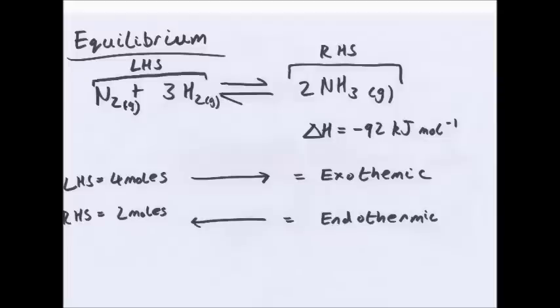Also delta H of the forward reaction is minus 92 kJ/mol. That means the forward reaction is exothermic. The backward reaction is endothermic. And also if you look, this will become more important later, the left-hand side has four moles of gas, one of N2, three of H2. And the right-hand side has two moles of ammonia gas, 2NH3.